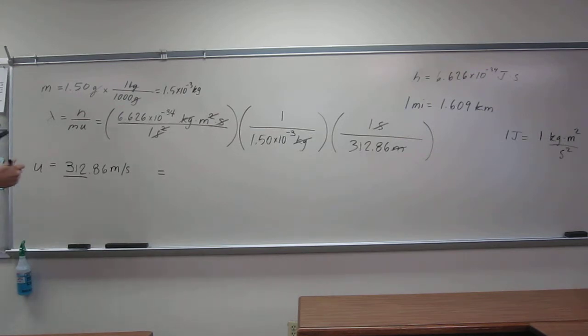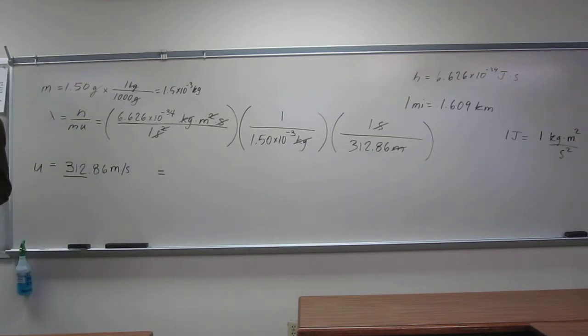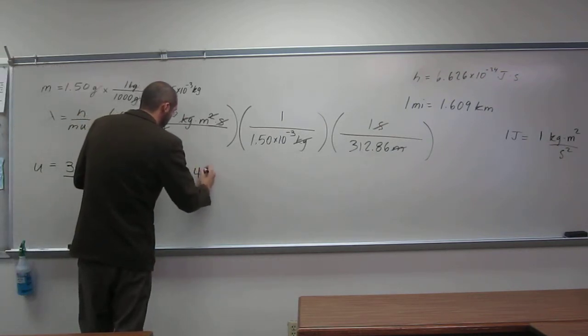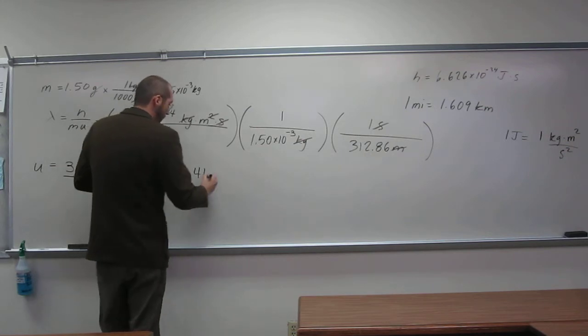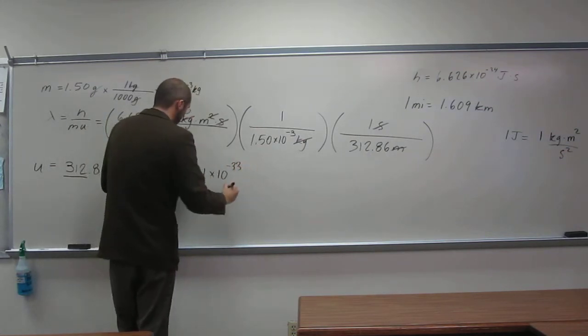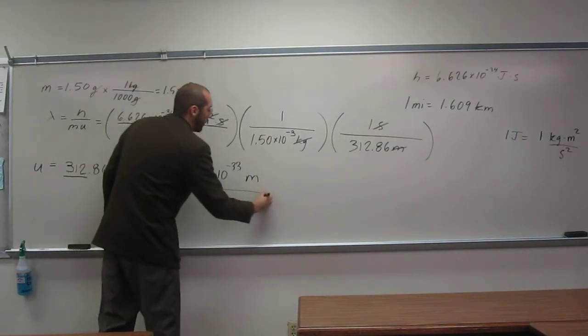You should expect that the wavelength for something so big would be a very small number. So what did we say? It's going to be to three sig figs. I've got 1.41 times 10 to the negative 33 meters. So that's the wavelength of this bullet.